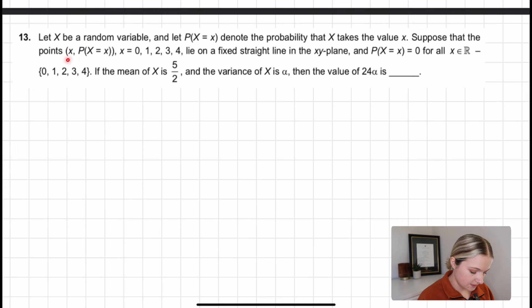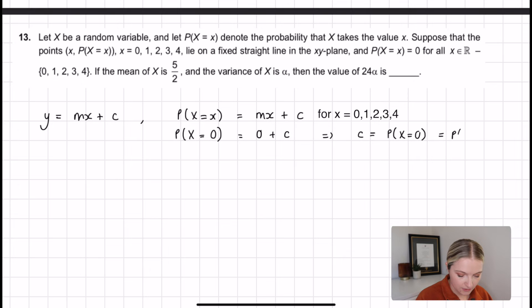One of the first things that we're told is that the points lie on a fixed straight line. We know that the equation for a fixed straight line is y equals mx plus c. Because we have y here as P(X=x), we can substitute this in and say P(X=x) equals mx plus c. We can figure out what the value for c is by noting that we have x equals 0. Substituting x equals 0, we end up with P(X=0) equals 0 plus c, which implies that c is P(X=0), or we can write this as P(0).